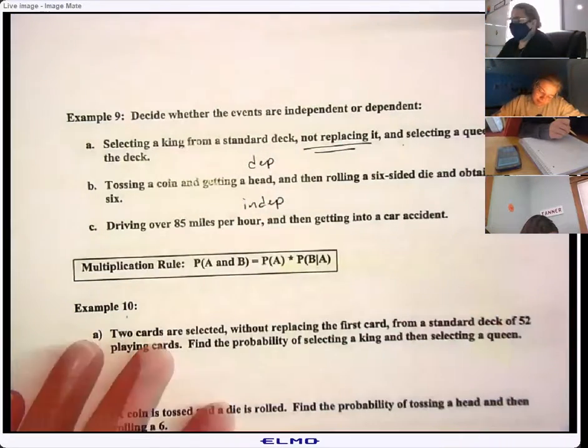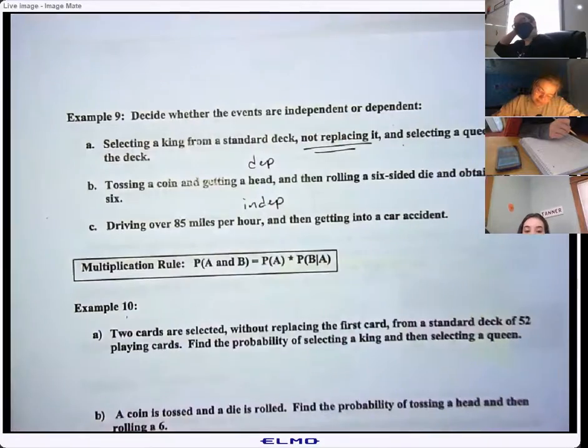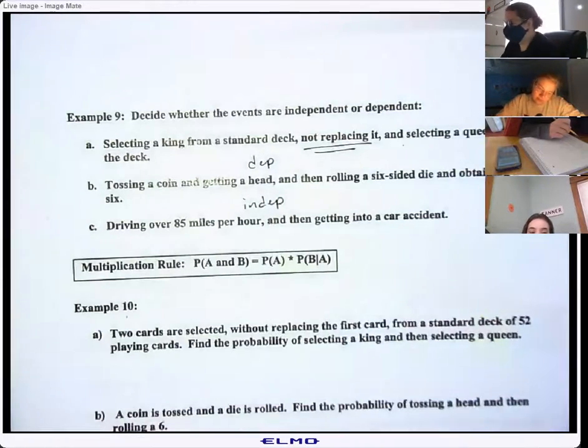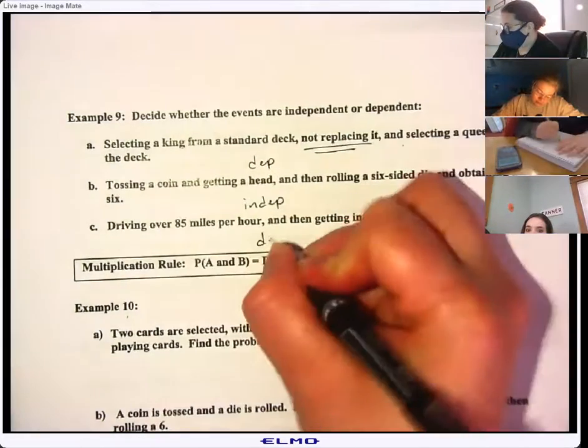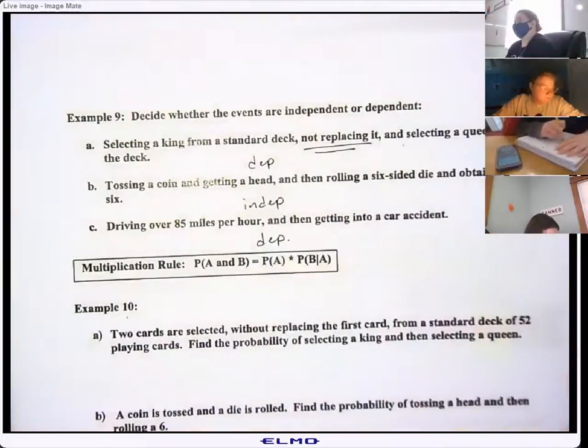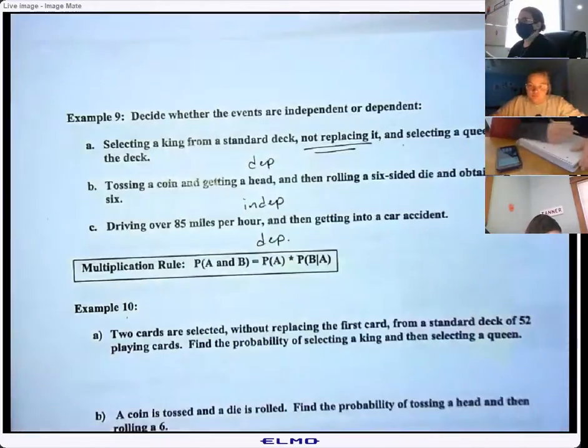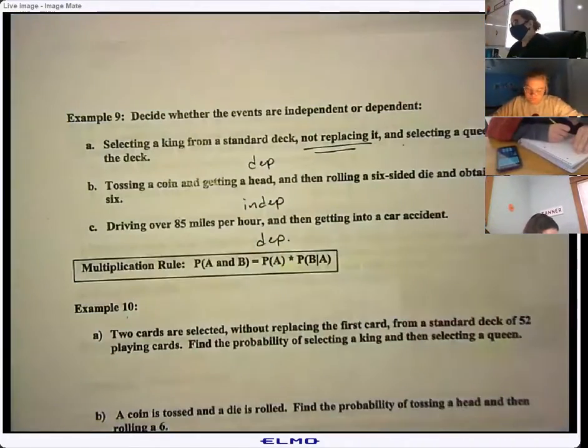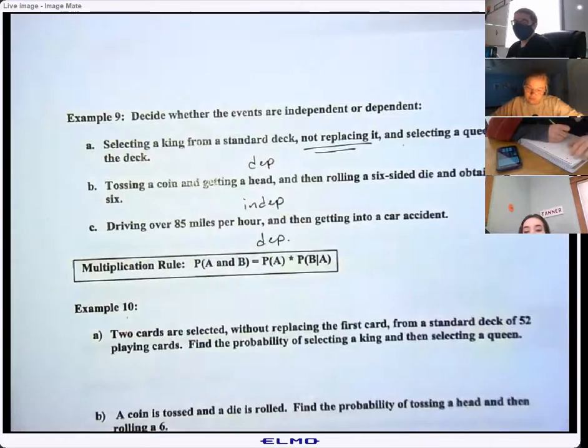Driving over 85 miles per hour and getting into a car accident. What do you think? Independent or dependent? Dependent. Not everybody who drives over 85 miles an hour is going to get into a car accident, but it probably ups your odds a little bit if you're going over 85 miles per hour.